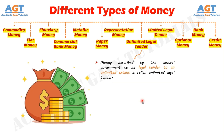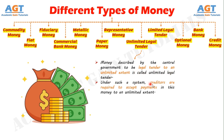Number 8: Unlimited Legal Tender. Money described by the central government to be legal tender to an unlimited extent is called unlimited legal tender. Under such a system, creditors are required to accept payments in this money to an unlimited extent. The rupee notes and coins are unlimited legal tender in India.